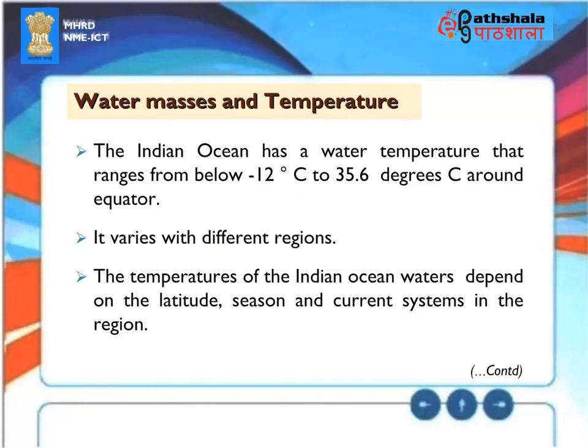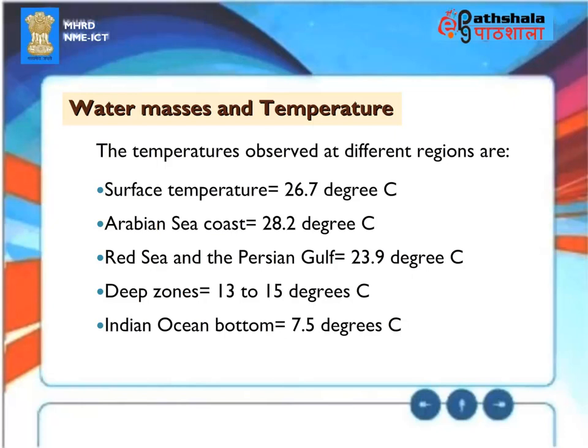Water Masses and Temperature. The Indian Ocean has a water temperature ranging from below −12°C to 35.6°C around the equator, varying with different regions. Temperatures depend on latitude, season, and current systems. Observed temperatures are: surface temperature 26.7°C, Arabian Sea coast 28.2°C, Red Sea and Persian Gulf 23.9°C, deep zones 13 to 15°C, and Indian Ocean bottom 7.5°C.